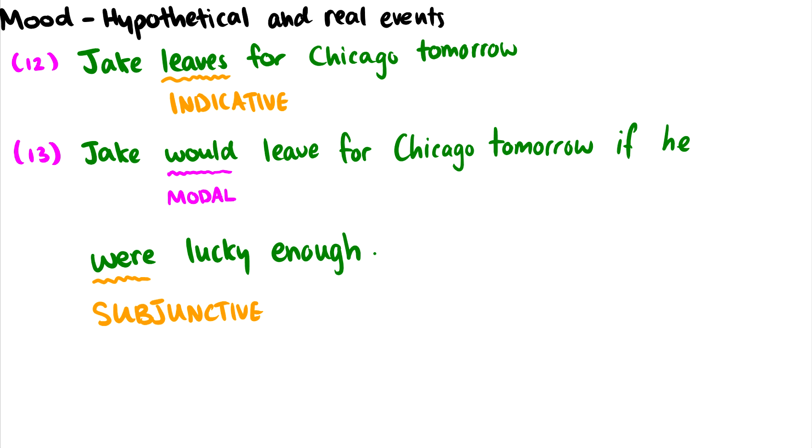Another thing is mood, which we have in English, but we're not usually too aware of it. So for instance, 'Jake leaves for Chicago tomorrow.' So these are hypothetical and real events. So indicative. 'Jake leaves for Chicago tomorrow.' That is absolutely going to happen. But in 13, 'Jake would leave for tomorrow if he were lucky enough.' So this is the subjunctive. This is the hypothetical. Like, hypothetically, if Jake were lucky enough, he would leave for Chicago tomorrow. That's kind of what this subjunctive tells us. And we have this in English, but we don't usually use this.